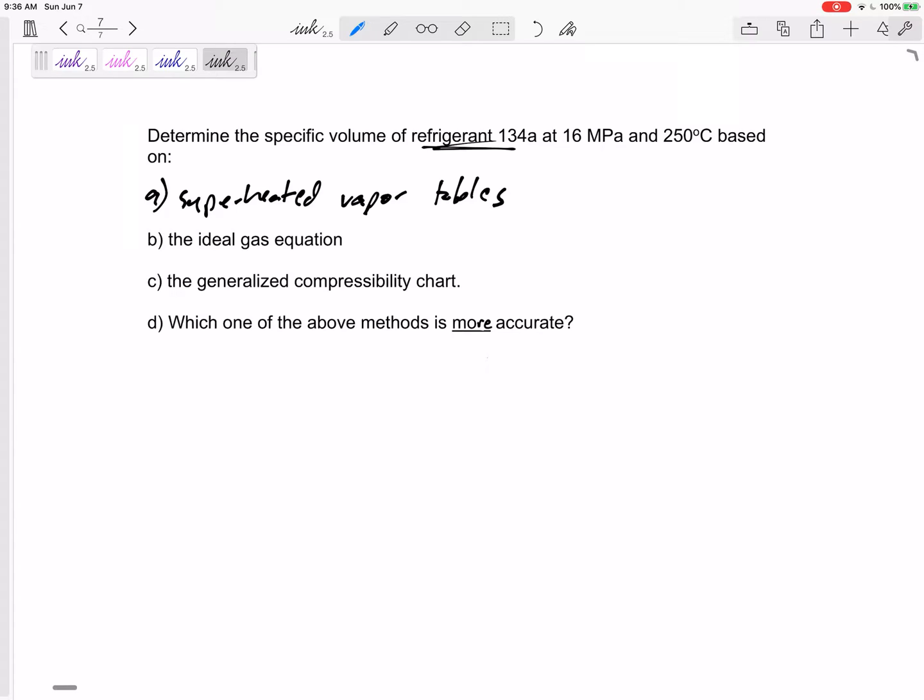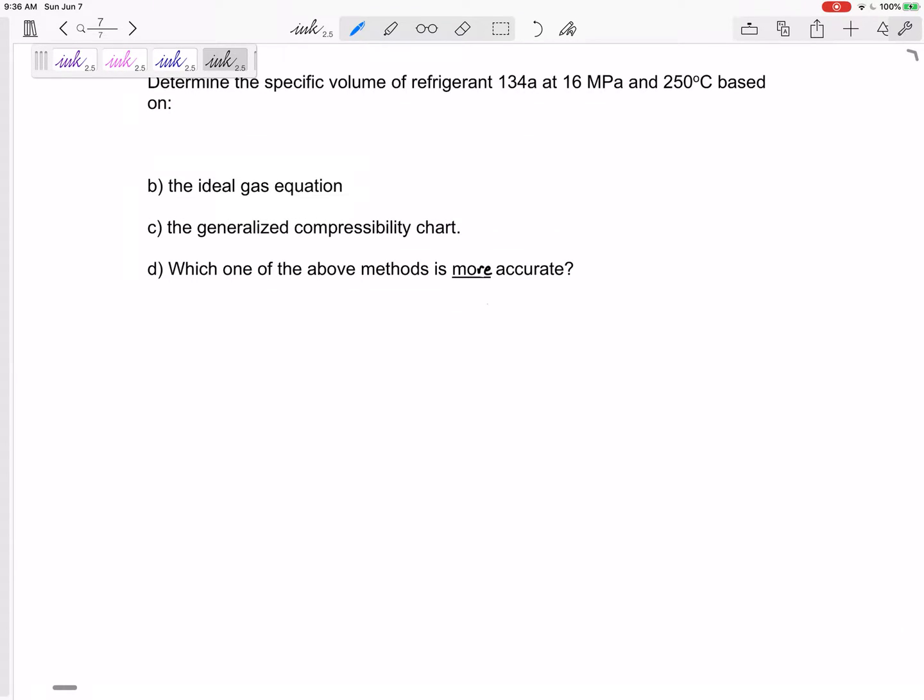All right, whether it's refrigerant or water, part A I'm probably going to ask you to find the specific volume using the property tables. If I remember correctly, sometimes in order to get you a good value on the compressibility chart, I have to go for some weird pressures and temperatures that may not be on the superheated table.